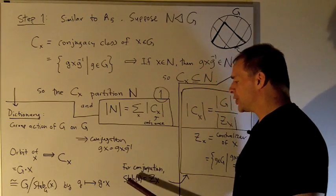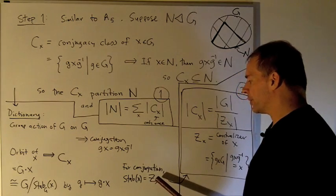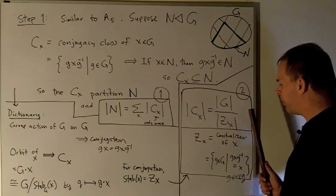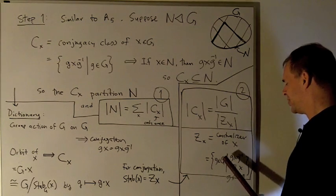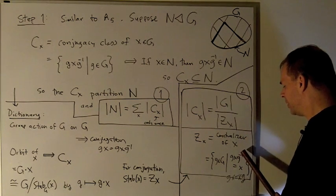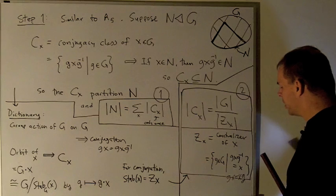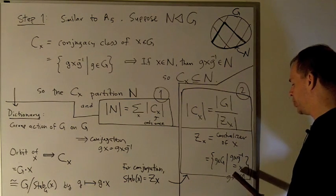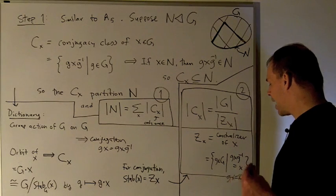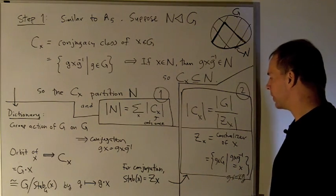That's going to correspond to our conjugacy class. The way we figure out what that is, is as a set, I take the group and then I take the quotient out by the stabilizer of G on X, which is just going to be taking all these elements of G that act on X. The stabilizer are going to be the elements. When I let them act on X, they just send X back to itself.